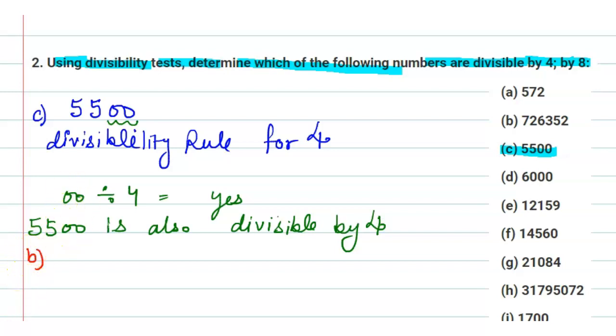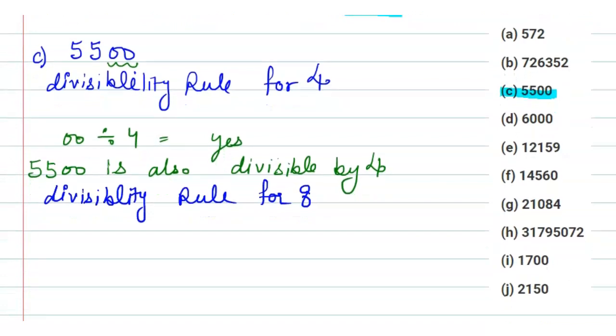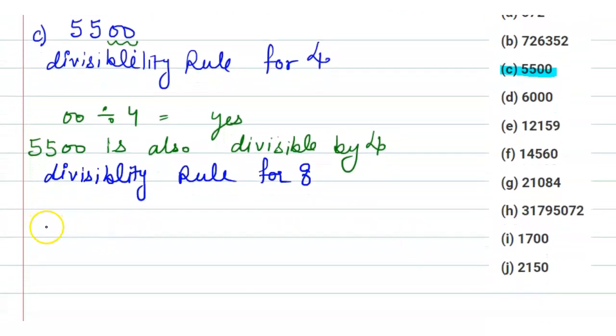Next, we will discuss the divisibility test for 8. The divisibility rule for 8 is: when the last three digits are divisible by 8, then the whole number is divisible by 8.